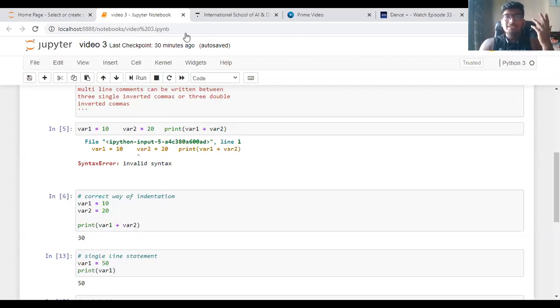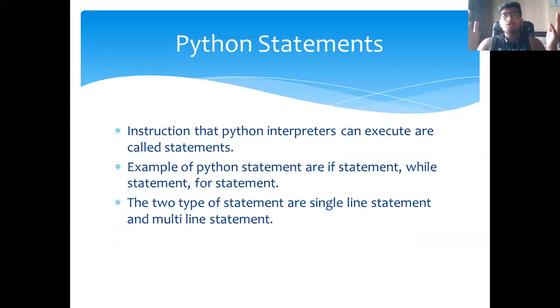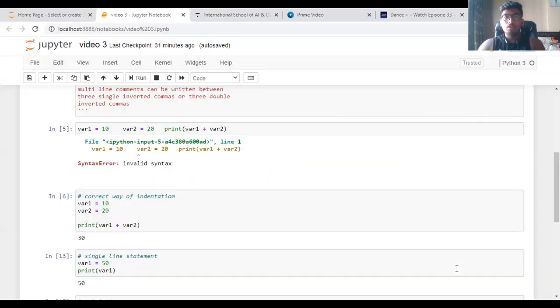Here comes the last but not the least, the fifth pillar: Python statement. Python statement helps the interpreter execute what the code is trying to tell. Python statements can be of two types: single line statement and multi-line statement. Examples of Python statements are if statements that I explained you previously, while, for, etc. Single line comments are generally used to assign certain values. Here var1 equals 50, I am assigning variable 1 with value 50 and it's a single line statement.